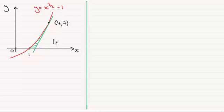We're told that the curve crosses the x-axis here at (1,0) and we're looking for the area contained between the curve and the tangent to the curve at (4,7). I've shaded it here in green.